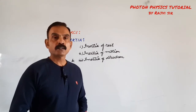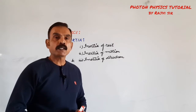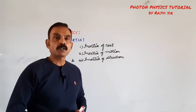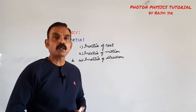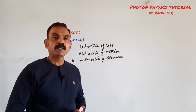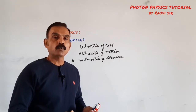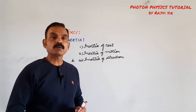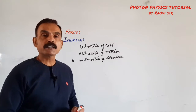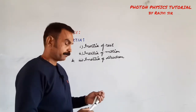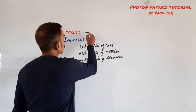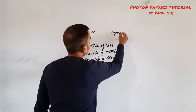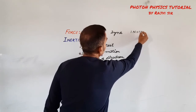You also know what force is. What is force? It is an external agent which produces or tends to produce a change in the state of rest, or state of motion, or shape or size of the body. The unit of force is Newton, denoted by capital N, and in CGS it is dyne. One Newton equals 10 to the power 5 dynes.